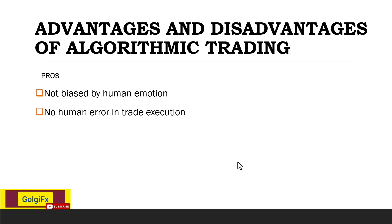With algorithmic trading, the trade is placed when the signal is seen by the set of instructions given to the code or the robot, so there is no way there will be an error when trading. There is also instant order confirmation — since algo trading is controlled by bots, there is instant order confirmation when a trade is taken.